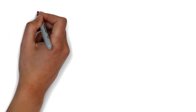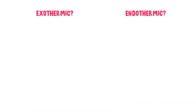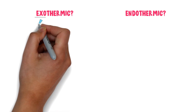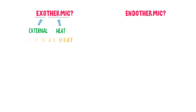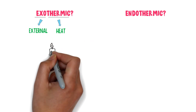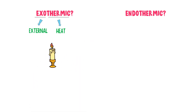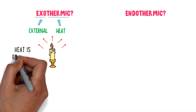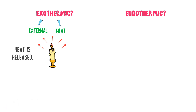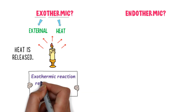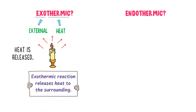Firstly, let me explain what exothermic and endothermic reactions are. The word 'exo' means external and 'thermic' means heat, so exothermic means releasing heat to the surrounding. For example, consider a burning candle — heat is released to the surrounding. So this is an exothermic process. Therefore, we say that an exothermic reaction releases heat energy to the surrounding.